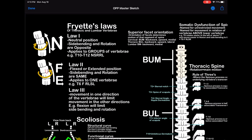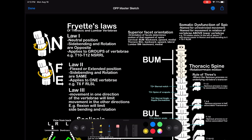Of course there's Law 1, Law 2, and Law 3 of the thoracic and lumbar vertebrae. A little way to remember: Law 1 — neutral position, rotation and side bending are opposite. Law 2 — flexed or extended, that's in the same direction. Look at those little arrows right there. And Law 3 just says one motion will restrict other motions.